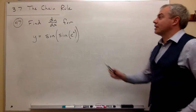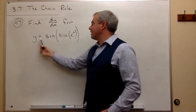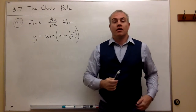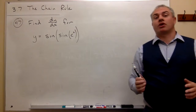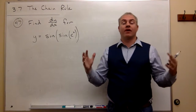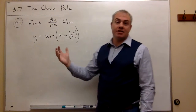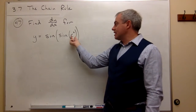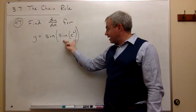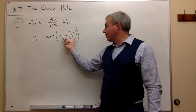In problem number 47, I'd like to find dy/dx for the function y equals sine of sine of e to the x. As with any chain rule problem, I start exactly the same way — I ask the question, what's the most outside function, or what's the last thing that happens here? If I were plugging this into my calculator, I'd say: what's e to the x, what's sine of that, and then what's sine of this? So the very last thing that happens is sine of something.